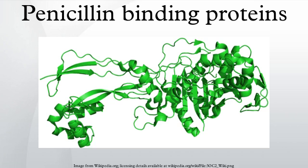Penicillin binding proteins are a group of proteins characterized by their affinity for binding of penicillin. They are a normal constituent of many bacteria, and the name just reflects the way by which the protein was discovered. All beta-lactam antibiotics bind to PBPs, which are essential for bacterial cell wall biogenesis.